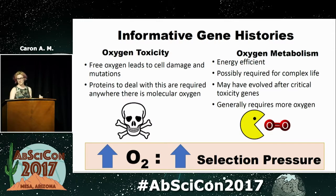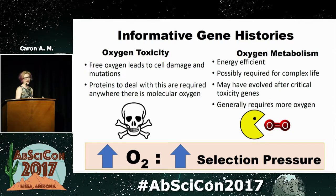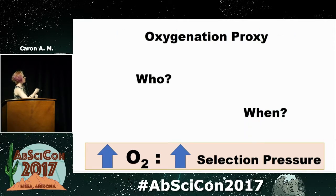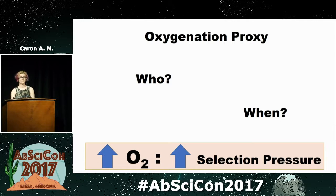Similarly, oxygen metabolism genes are really interesting because they're super useful. If you have them, you can use oxygen — they might have even been required for complex life; they're just really energy efficient. But they do require more oxygen than you would expect to need to have to have these oxygen toxicity genes. So the idea was maybe we'll see these genes rise, and then the oxygen metabolism genes rise later. And we can look at which lineages acquire these genes and when — both in time and in ecological space.